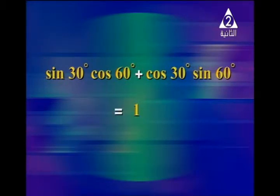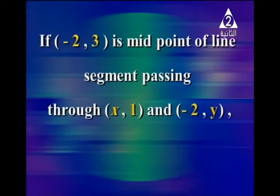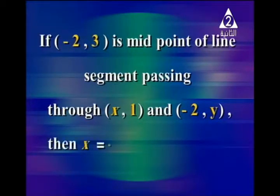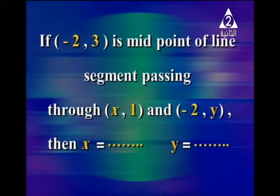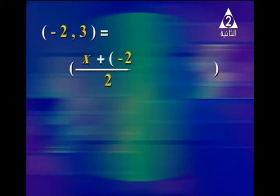Another example: if negative 2 and 3 is the midpoint of a line segment passing through the points x and 1, and negative 2 and y, then x equals what and y equals what? We use the midpoint rule which says the midpoint equals (x1 plus x2 over 2) and (y1 plus y2 over 2). So negative 2 and 3 equals (x plus negative 2 over 2) and (1 plus y over 2).